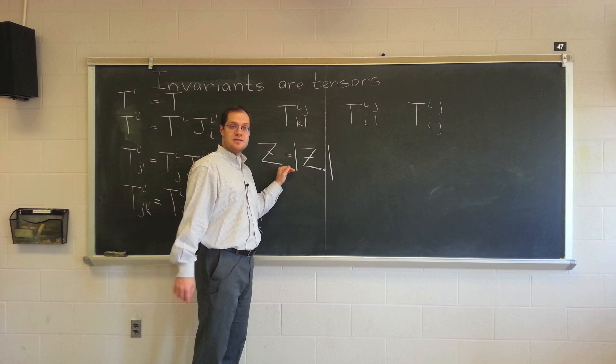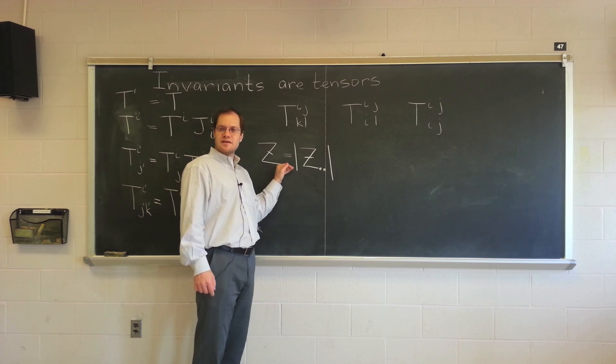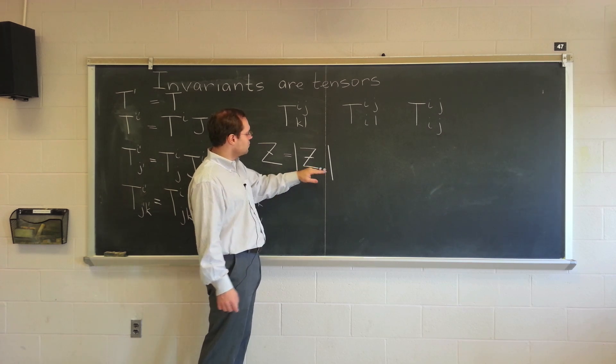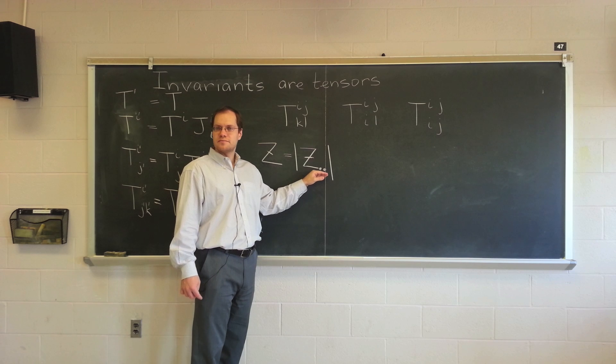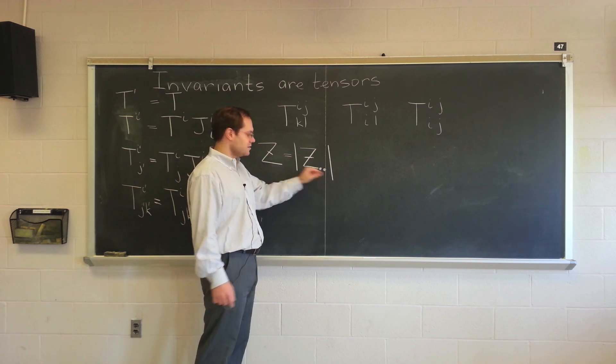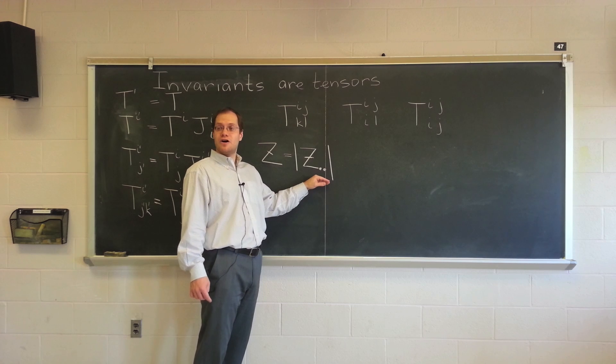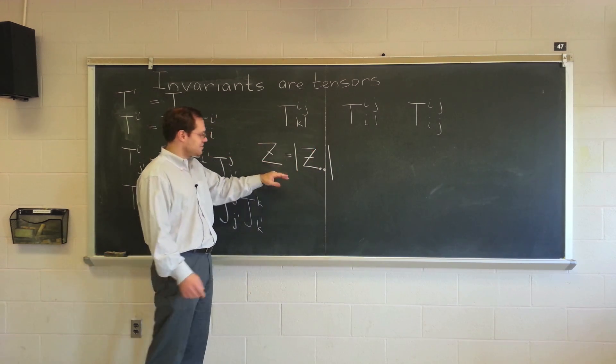and that's certainly a variant, because it's something that has no indices. It's just a number. Now let's think, is this variant an invariant? So for example, what is this value in Cartesian coordinates? One. Right? And what is this value in polar coordinates? R squared. So it's not an invariant. That's a good example. So here we go. That's probably the best example.